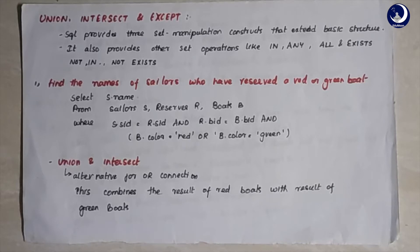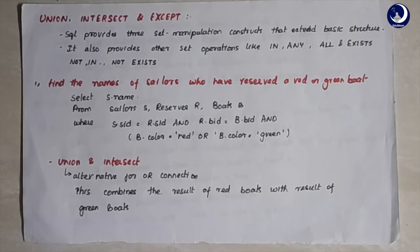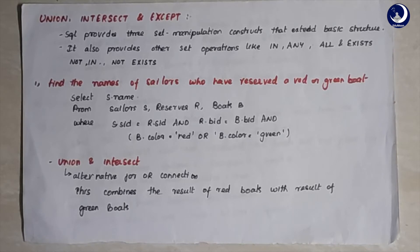Welcome back to demo tutorials on database management systems. In today's lecture we're going to discuss the third topic of chapter 3 which is union, intersect, and except. We have executed many SQL queries which gave us a multi-set of rows. SQL provides constructs that let us perform set operations on tables - union, intersect, and except. We also have other set operations like in, any, all, and exists, which we will discuss in the next lecture.